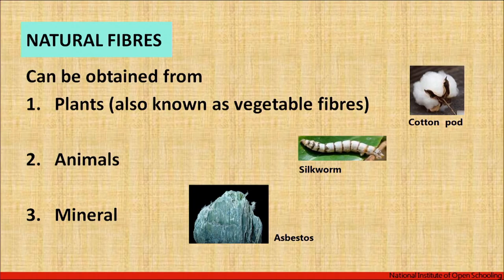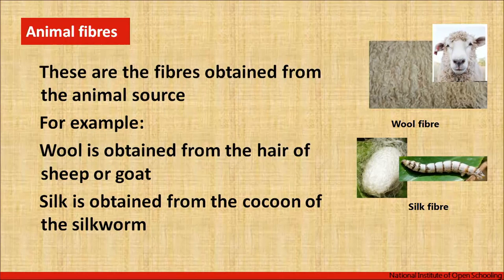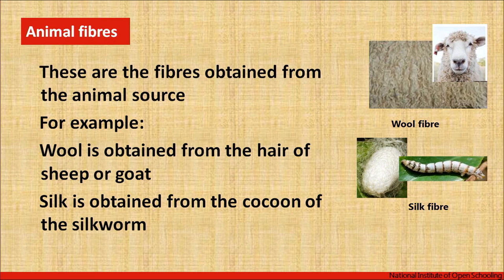Natural fibers include plant fibers, animal fibers, and mineral fibers. Fibers obtained from different parts of plants are called vegetable fibers — for example, jute and flax come from the stem of the plant, while cotton comes from the seed hair. For protein fibers obtained from animal sources: wool fiber is obtained from the hair of sheep or goat; angora rabbit also gives us wool fiber, which is very expensive. Silk is obtained from the cocoon of the silkworm through sericulture — after degumming and processing, we get yarn from the cocoon and make it into fabric.